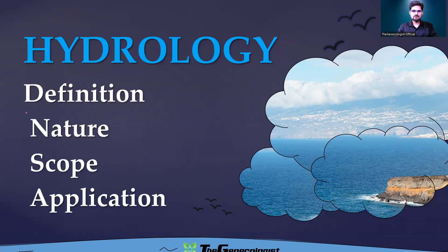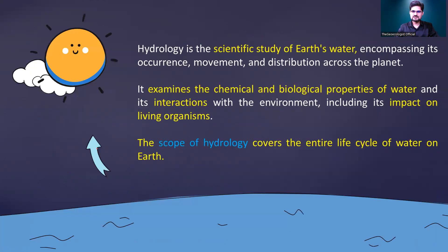In this video we are going to learn about the definition, nature, scope and application of hydrology. Starting with definitions: hydrology is the scientific study of earth's water in all forms, encompassing occurrences, movement and distribution. Occurrence is the first thing, movement is the second, and distribution of all the earth's water across the planet is the third. That is what hydrology is all about.